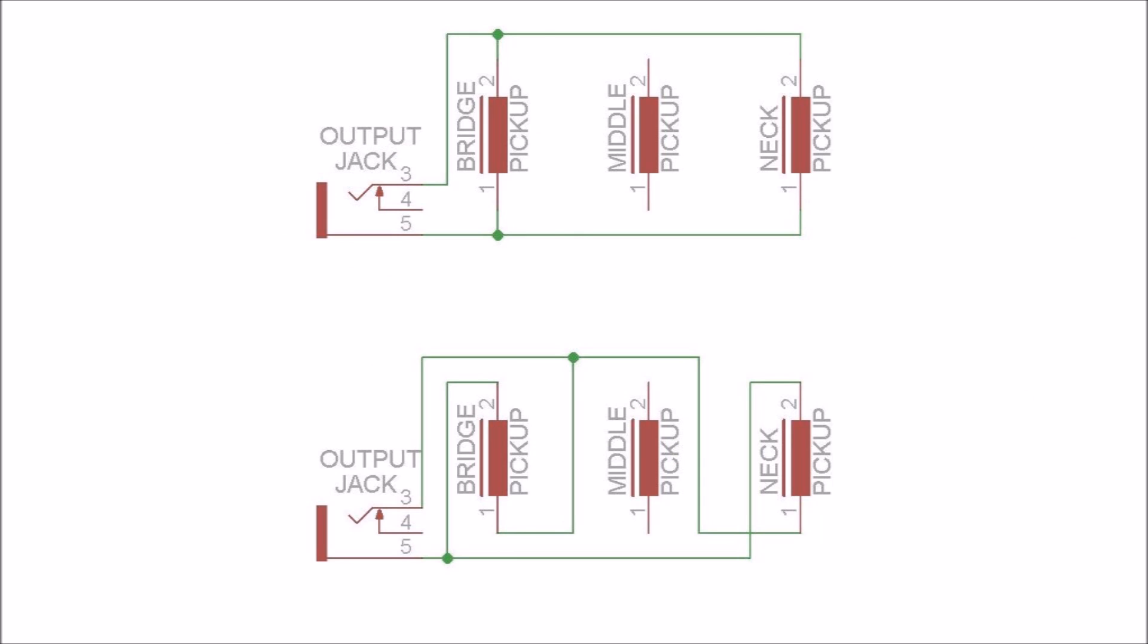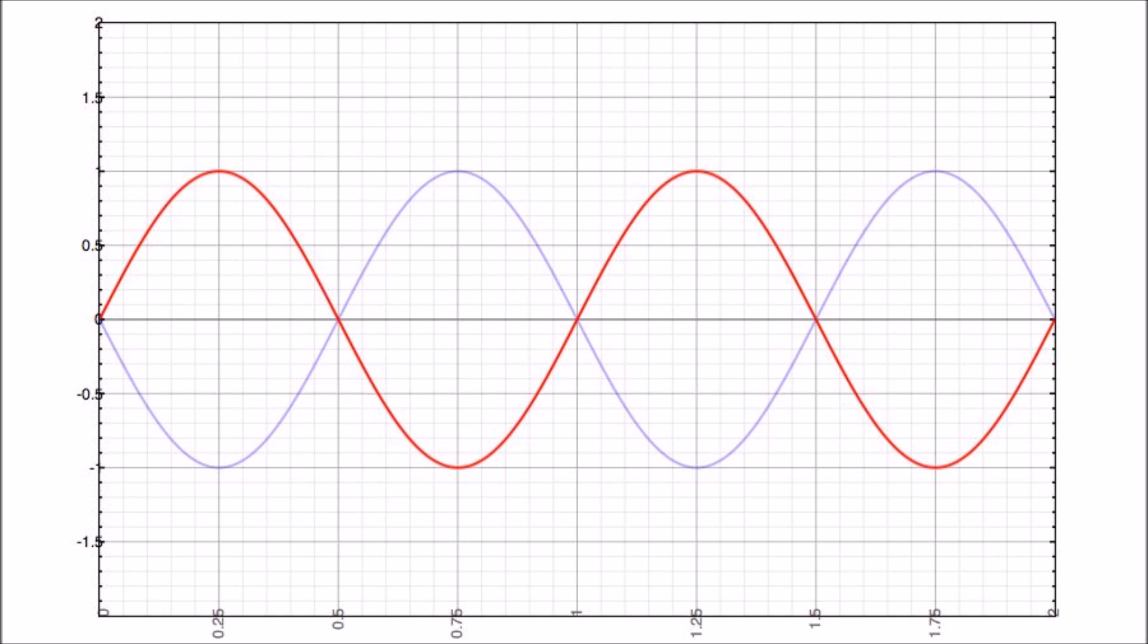For example, in the diagram on top, the neck pickup is connected in parallel to the bridge pickup, while both are oriented in phase relative to the circuit ground. In the other diagram at the bottom, the same pickups are still connected in parallel, but this time both are oriented in reverse phase relative to the circuit ground. Although connected differently, the tone output of both connections will sound the same. The only difference is that the signals from each connection is the reverse phase of the other.